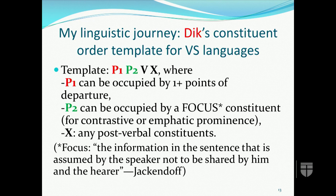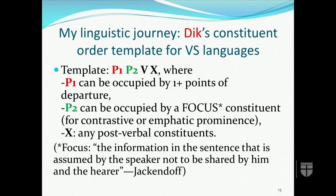The template is P1, P2, V, and X, where position one (P1) is occupied by one or more points of departure. Traditional grammar talks about two reasons for fronting something in the sentence: contrast and emphasis. These essentially correlate with Deak's two categories of P1 and P2 — P1 being contrast and P2 being emphasis. But traditional grammars didn't really talk about having multiple fronted constituents, and that's what Deak is accounting for.